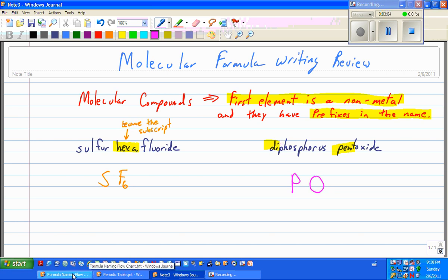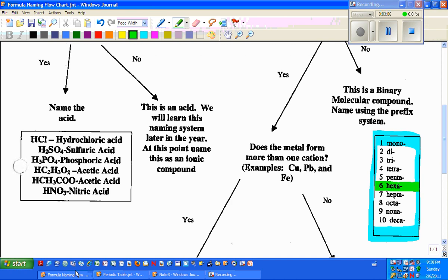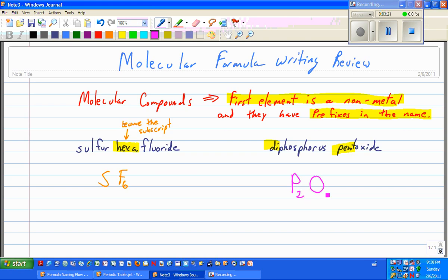Di, again, we're going back to our flowchart. Di is right here, that's 2. And then penta is right here, that's a 5. So it's P2O5.